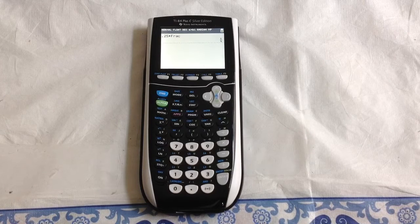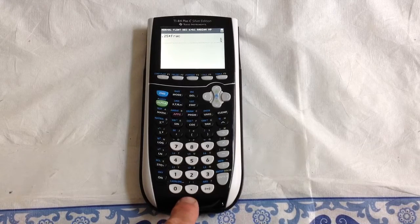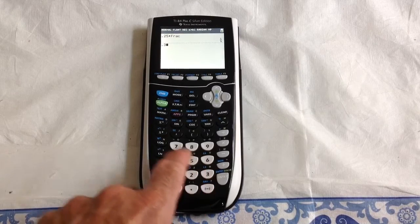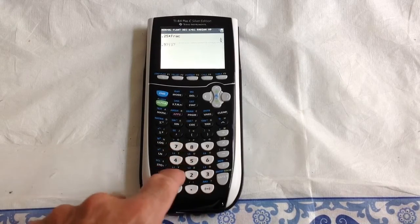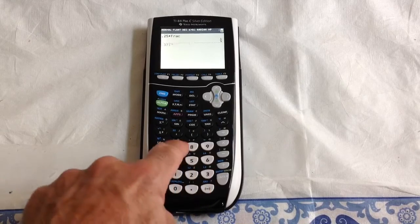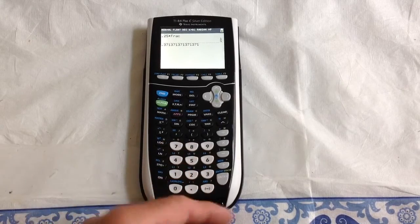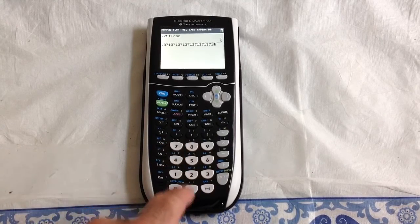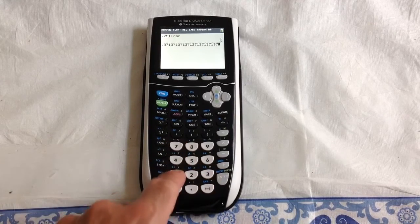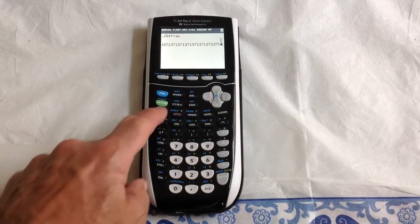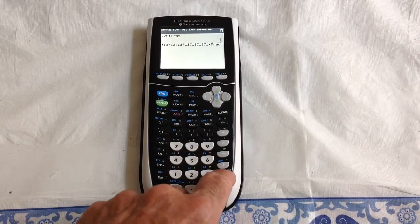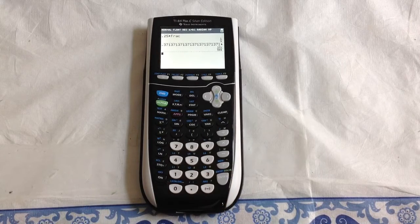This will work for any decimal. If you want to do a repeating decimal like 0.371371371..., you have to type it enough times that the calculator knows that it's repeating. If you do it seven or eight times, it should get the idea. Then press math, then fraction, and it'll change that repeating decimal into a fraction.